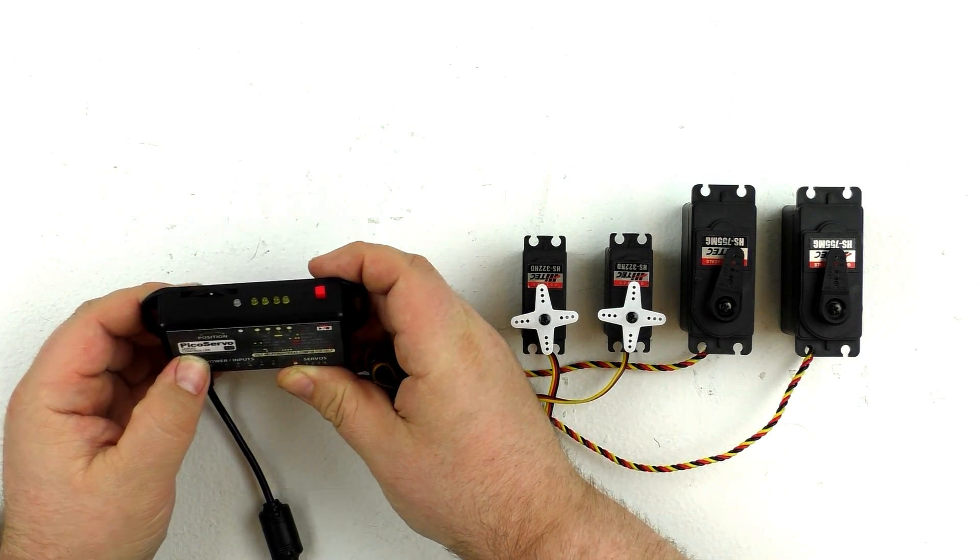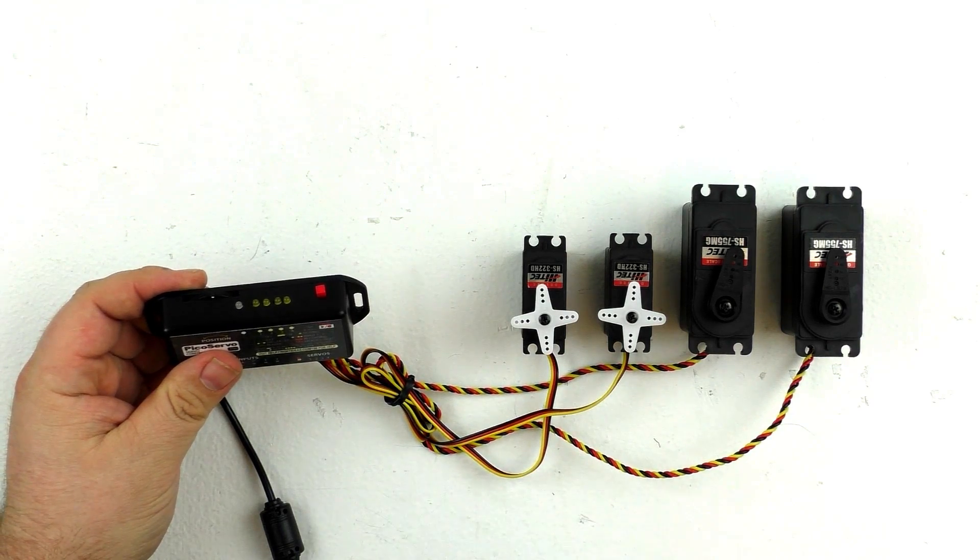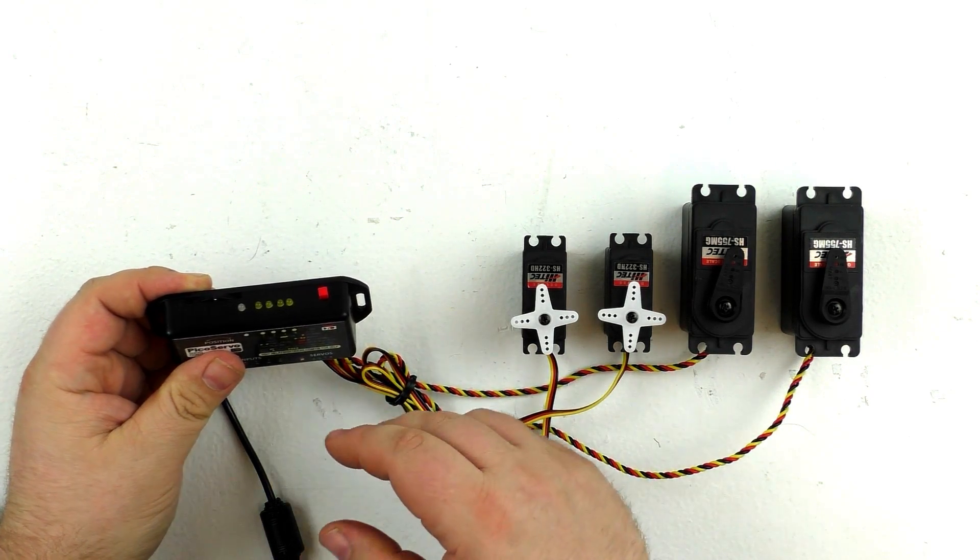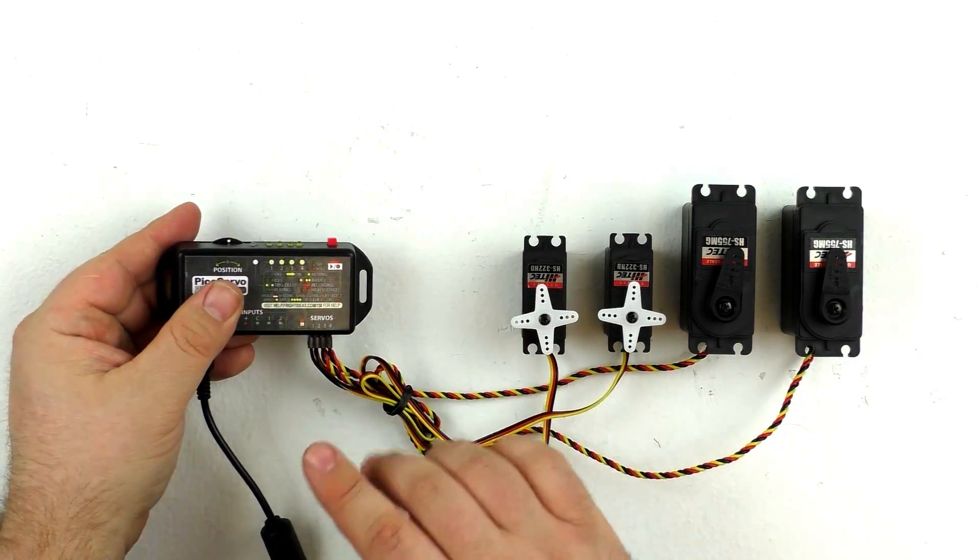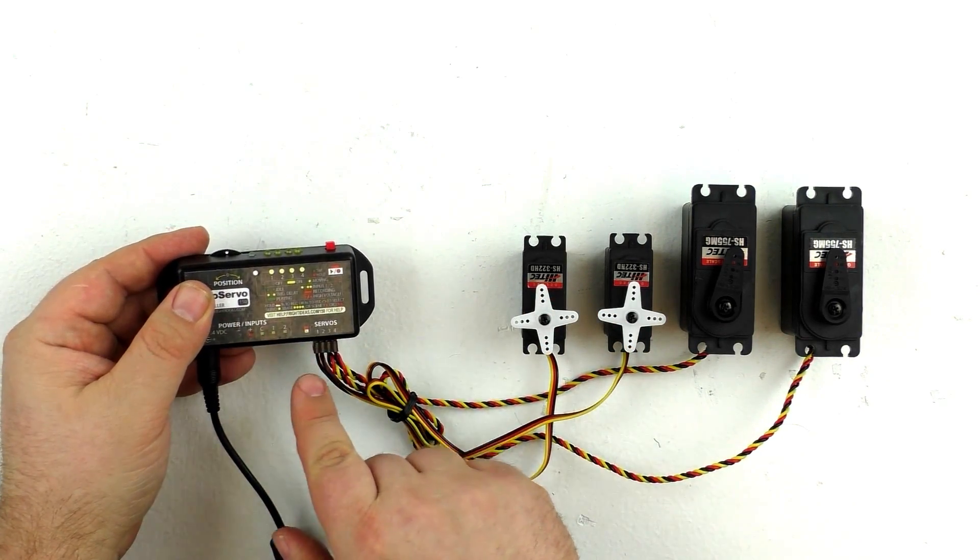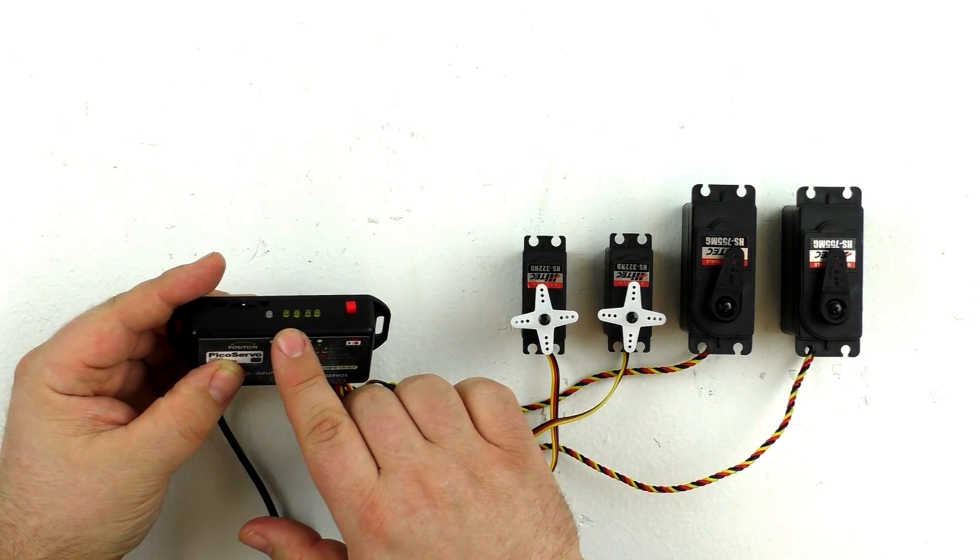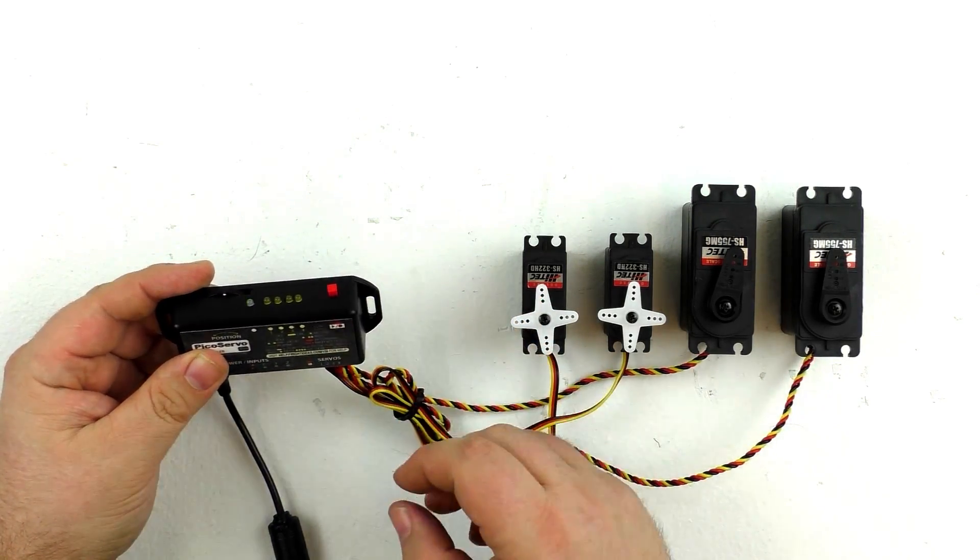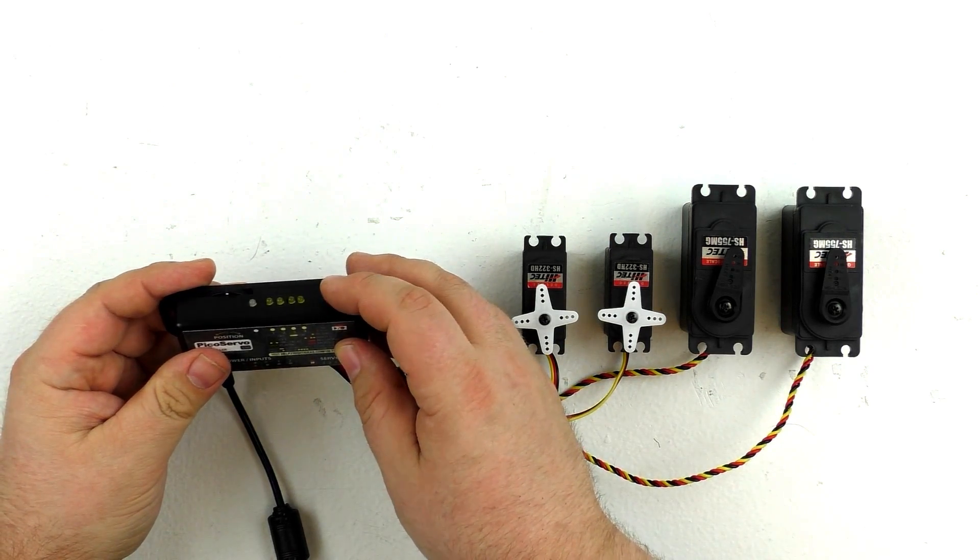When the light starts blinking, we can let go. Now we are in the settings menu, and the first setting are for the input modes. You can have different modes that affect how the inputs relate to each other. We're just going to skip that and leave it at one blink, that's the default mode. We're going to press the record button to move on to the servo settings menu.